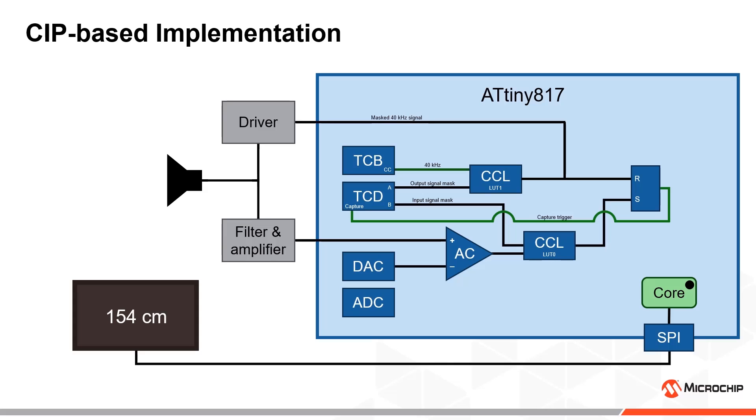Direct communication between the core independent peripherals enables this implementation to have more accurate and deterministic signal detection than the core-based implementation we discussed earlier in this video. Time-critical polling is mostly eliminated, and signal delays are shorter and more deterministic, which makes fine-tuning easier and improves performance.